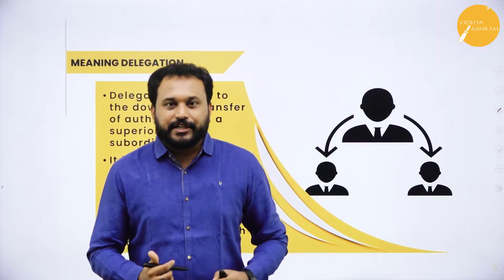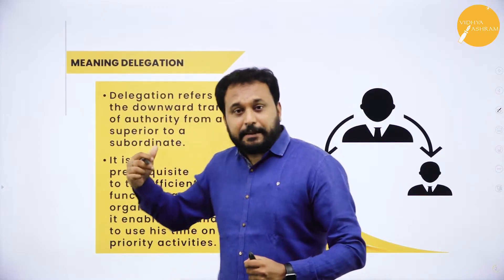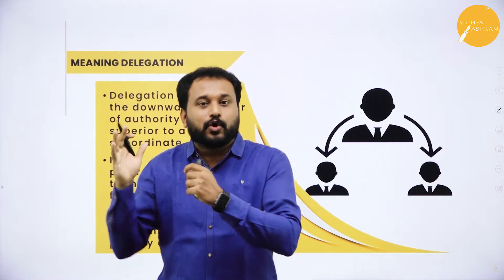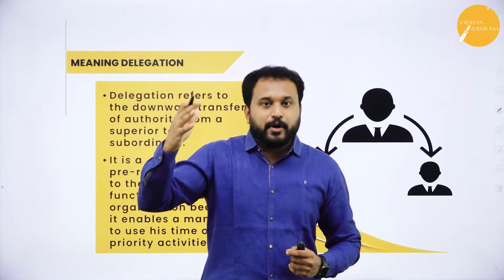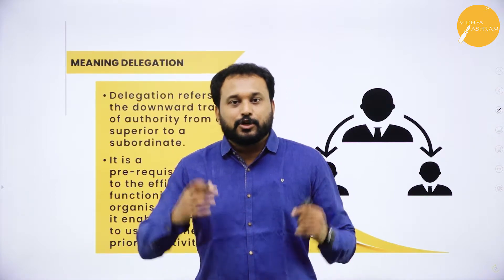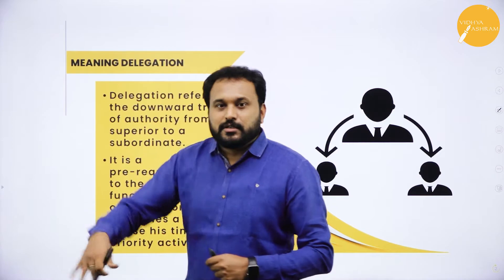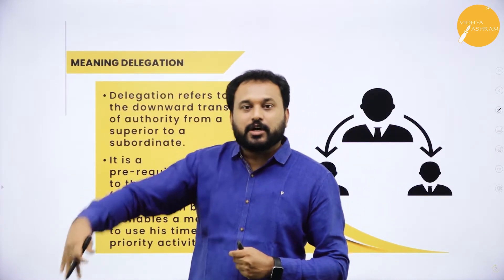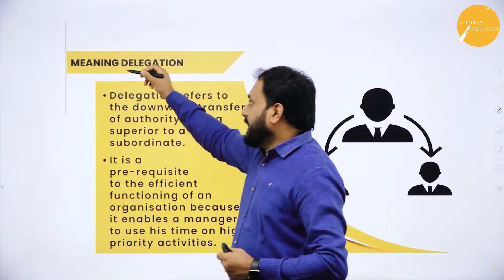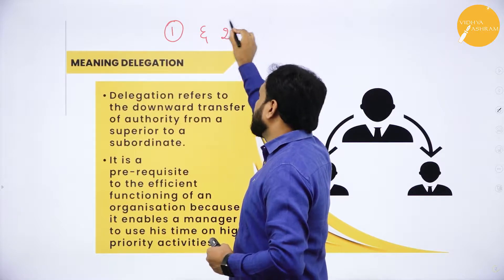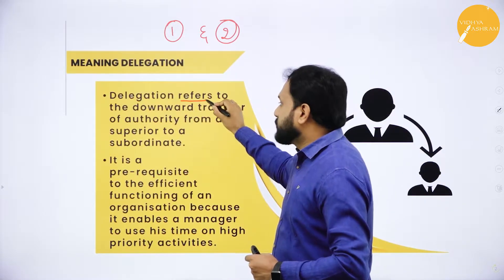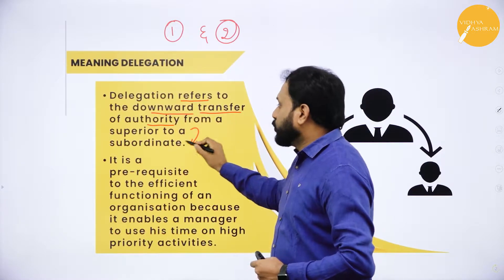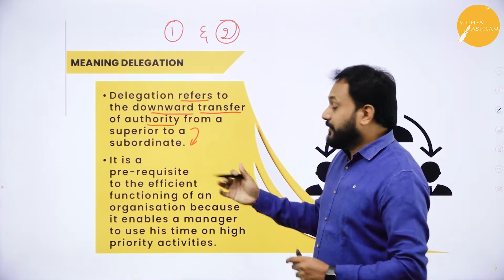Delegation is a temporary kind of arrangement. When the superior needs to attend meetings, a board meeting, or a trip, he cannot do the work in his office, so he transfers his authority and responsibility to a subordinate — not to a superior. That is why delegation is always a downward movement: the downward transfer of authority from superior to subordinate.